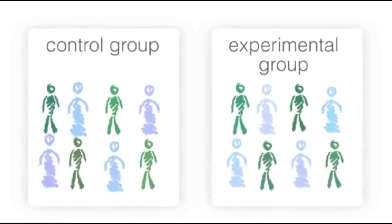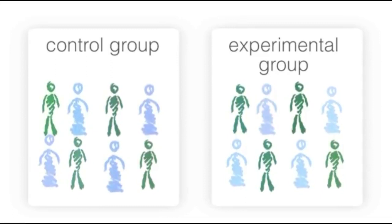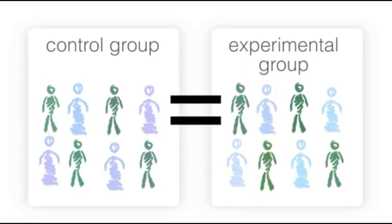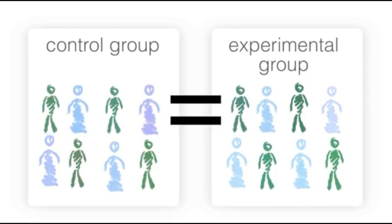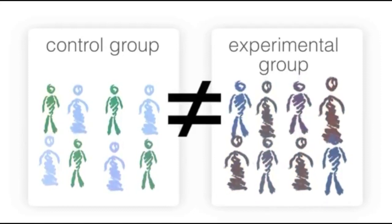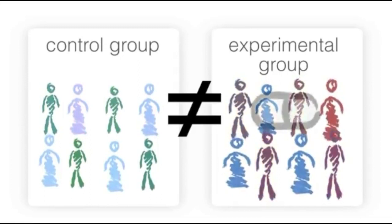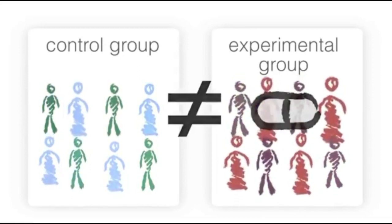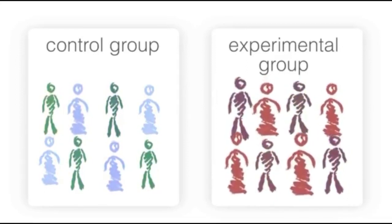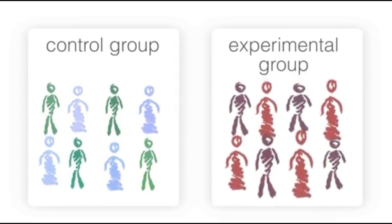Since everyone in this study will experience different natural changes, researchers can measure the changes in each person, add them together, and find the average change for each group. If the average change in all the groups is the same, then the changes in any one person, whether for better or worse, are probably due to natural variation and not whatever is being researched. However, if the average change in the experimental group is much better or worse than in the control group, it's likely that the new treatment is what's making a difference. A control group is used to help researchers know the difference between these natural changes and the true effects of whatever is being researched.